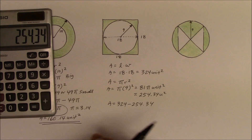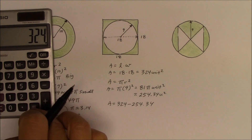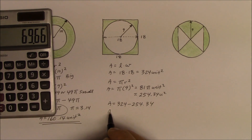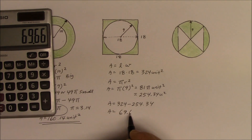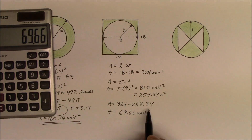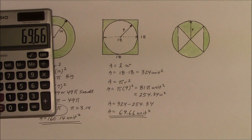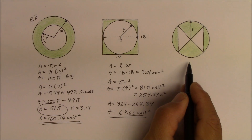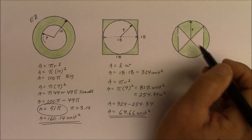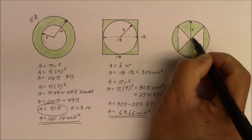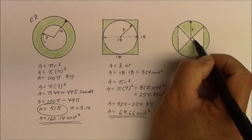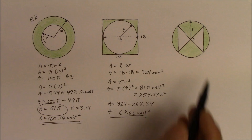Subtracting those gives area equal to 69.66 units squared — those are the bits of paper remaining. There it is. Did you get that one? To make your life easier with the next one, let's assume this angle is 90 degrees — it really doesn't matter, but go ahead and try it.